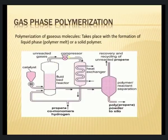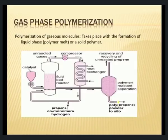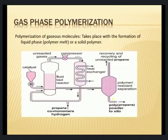There are two circulations: one for unreacted gases removed through a heat exchanger, and one through the separation path, with the product coming out from the bottom. It is a mix of gas and solid after polymerization; care should be taken with the gaseous material. This method involves the formation of a liquid phase or polymer melt at high temperature — the solid polymer could be in melt form or powder form, which is then removed as the product.